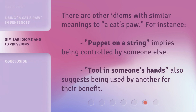There are other idioms with similar meanings to 'a cat's paw.' For instance, 'puppet on a string' implies being controlled by someone else. 'Tool in someone's hands' also suggests being used by another for their benefit.